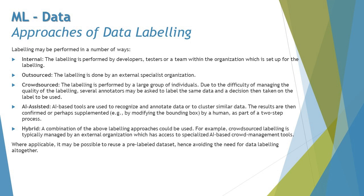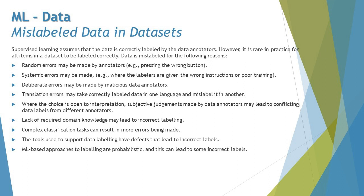Now, what are the consequences if your labeling goes wrong? This is what we call mislabeled data. Supervised learning assumes that data is correctly labeled by data annotators; however, in practice it is rare for all items in a dataset to be labeled correctly, because both humans and AI-based annotation systems can make errors. Knowing the reasons for mislabeling can help us prevent them. For example, random errors may be made by annotators — we can reduce these but not eliminate them entirely.